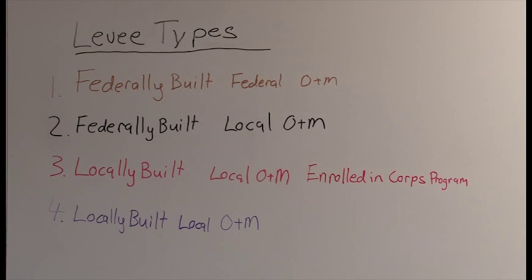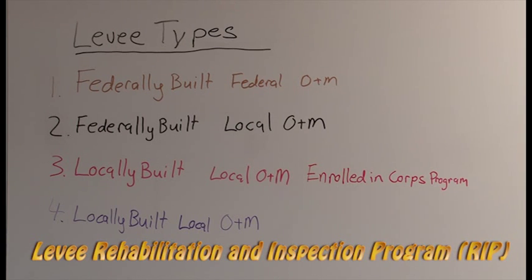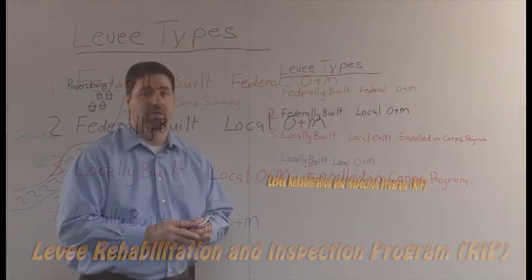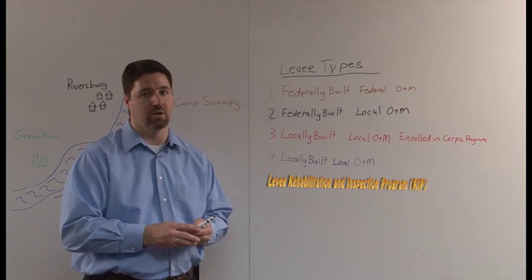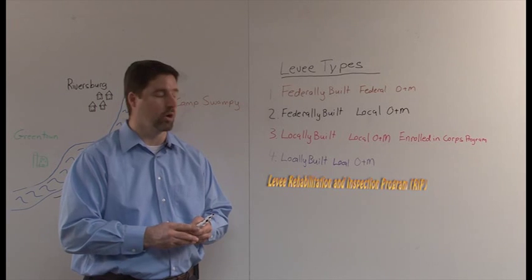The third type is built by the locals and then the locals operate and maintain that levee. However, they've enrolled in the Corps' program. The fourth type is locally built and locally operated and maintained. It is not enrolled in a Corps' program.